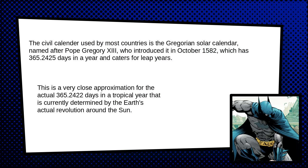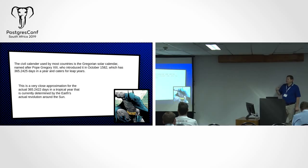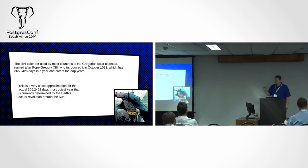The civil calendar used by most countries is the Gregorian solar calendar, introduced in 1582. It has 365.2425 days and catered for leap years — very close to what we have today, which is 365.2422 days, determined by the earth's actual revolution around the sun. Here's the catch: we're slowing down. Every year there are leap seconds, so the time is constantly changing. Next time you under-appreciate your NTP server, think about this.